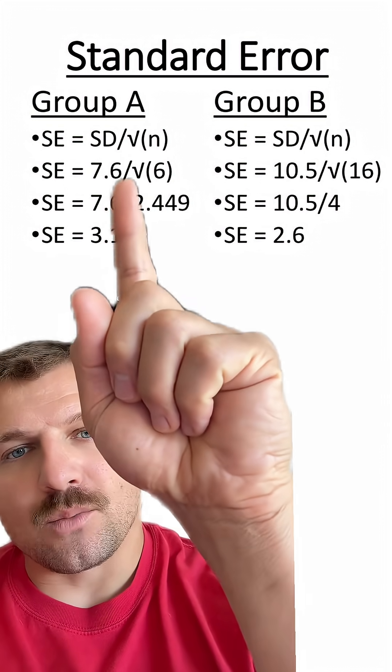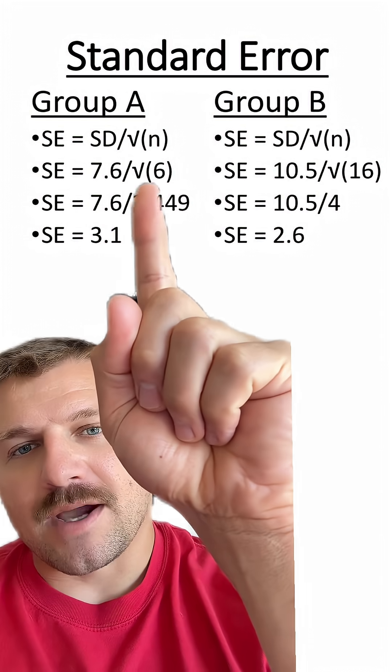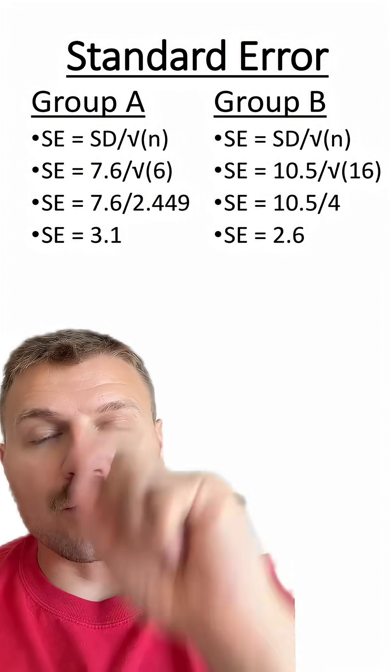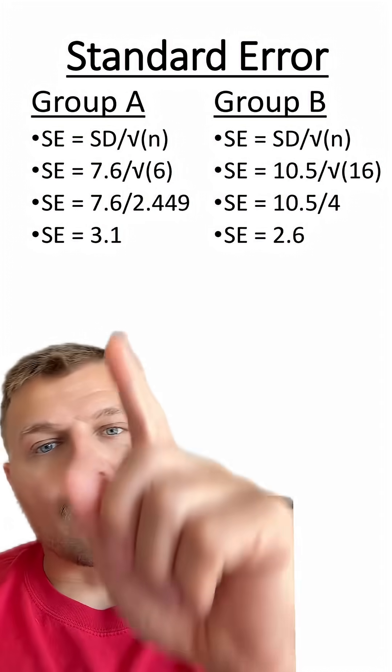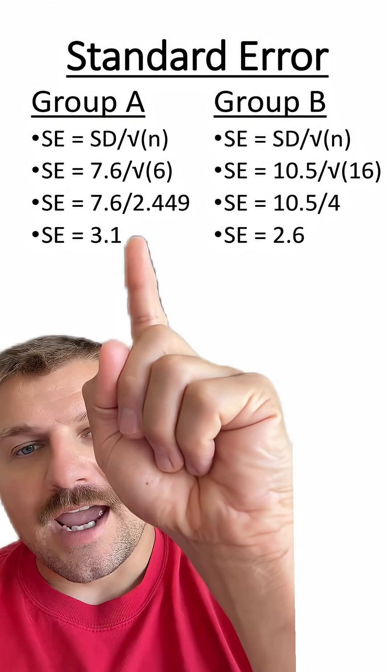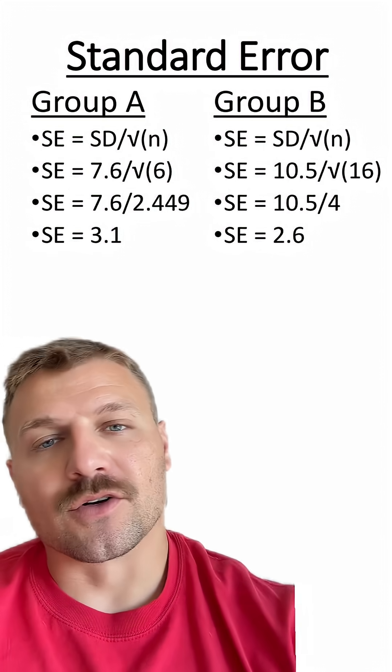For Group A, we have a standard deviation of 7.6, and we're going to divide it by the square root of n, which is the number of data points. Group A had six data points. So we take 7.6 divided by 2.449, and we get 3.1 as our standard error of the mean for Group A.